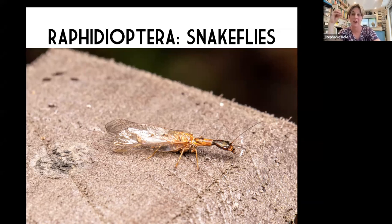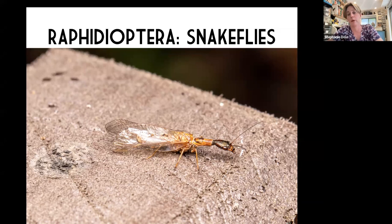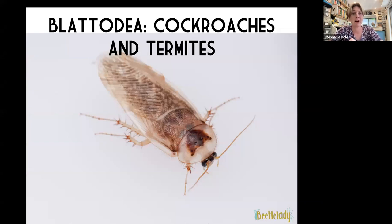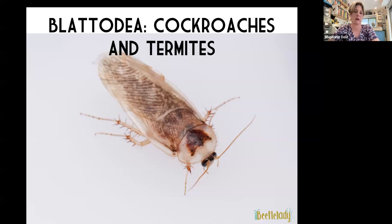An interesting thing about snakeflies is that unlike almost all insect groups, which have way more diversity in tropical regions, this is a uniquely temperate insect group. We don't have any of them in places like the Amazon; we have a lot of them in North America. I want to change your hearts and minds about cockroaches and termites — these are now considered the same group. Termites are basically cockroaches with fancy social lives, and we actually see a lot of intermediate steps toward sociality in cockroaches. This sand cockroach from the Anza-Borrego area is one example.